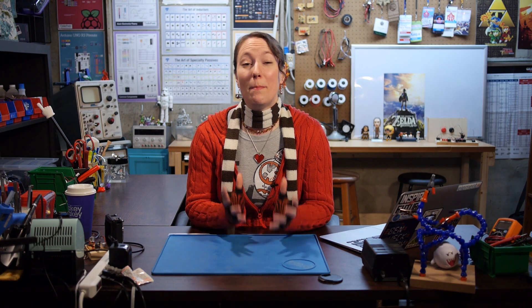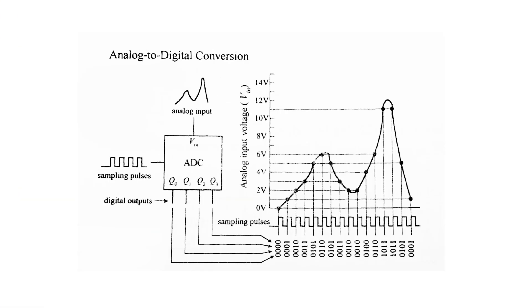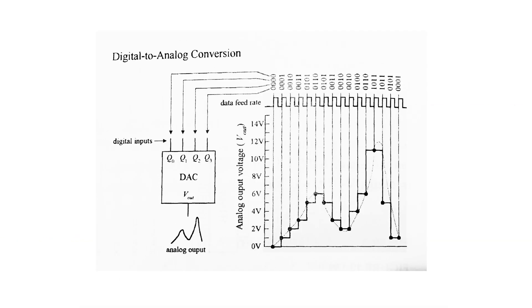Some integrated circuits are mixed signal, incorporating both analog and digital signals. An analog-to-digital converter, or ADC, receives an analog input signal and outputs a 4-bit binary number that is proportional to the analog voltage it measured. A digital-to-analog converter, or DAC, takes a binary number and converts it to an analog voltage that is proportional to the binary number.